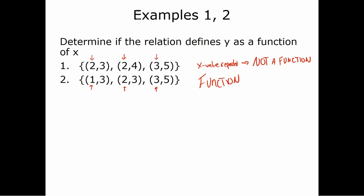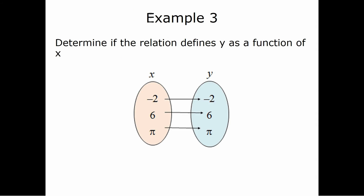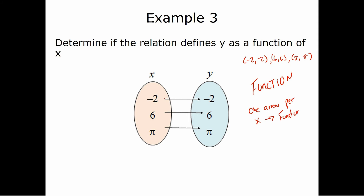What if we have a relation shown as an arrow diagram? We can write it as ordered pairs: (−2, −2), (6, 6), (π, π). None of the x values are repeated, so it's a function. There's an easier way to see this: as long as there is only one arrow per x value, it's a function. If negative 2 had arrows going to both −2 and 6, the x value would be repeated, making it not a function.